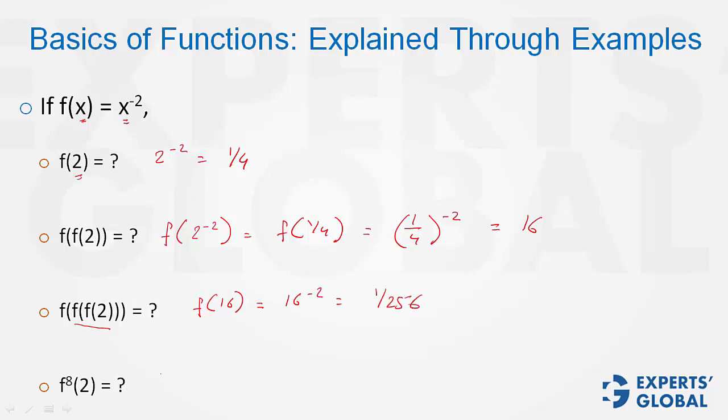f to the 8 of 2. Now we know that f to the 1 of 2 is 2 raised to power minus 2. f to the 2 of 2 is 2 raised to power positive 4. f to the 3 of 2 is 2 raised to power minus 8. So see, alternately the signs are changing negative and then positive, and the power is of the form 2 raised to power n. f to the 8 is even.